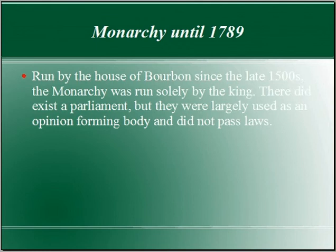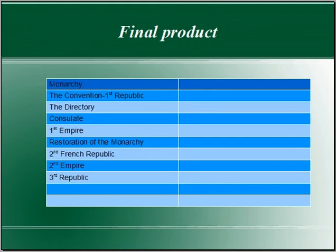So we'll go in and explain who ruled. In this case we had the Bourbons, which were the kings — monarchy — the type of government. Who got to participate? In this case we just have the king and a parliament, but not parliament in the sense that we would usually think of. And then again, why it was destroyed. So my final product should look something like this.